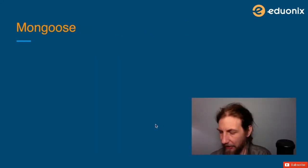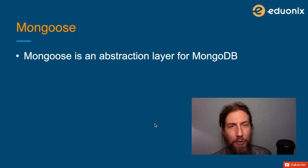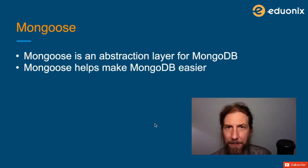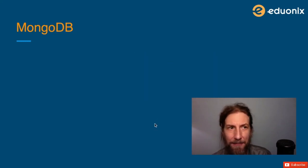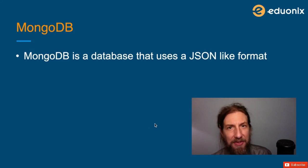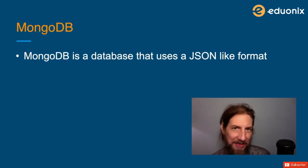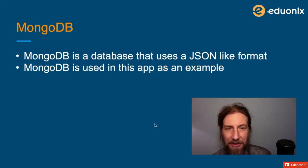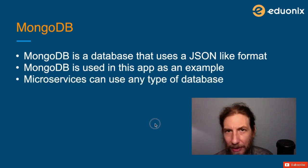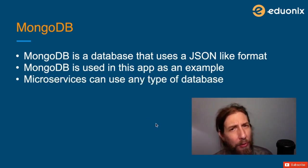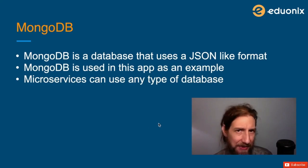Mongoose is an abstraction layer for MongoDB, and its job is to make working with MongoDB easier. MongoDB is a database that uses a format that's like JSON. It's used in our example BirdSquawk app, but a microservice can really be any type of database — it doesn't have to be MongoDB.